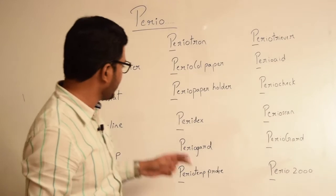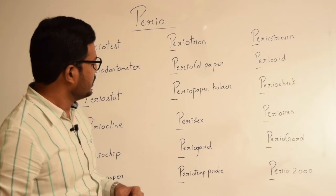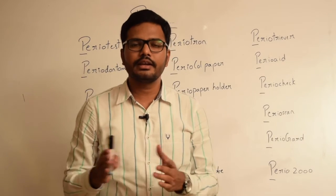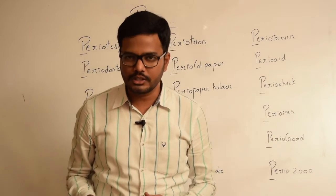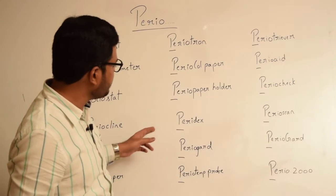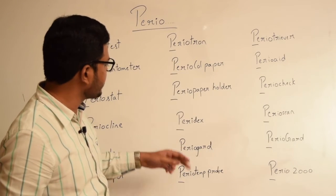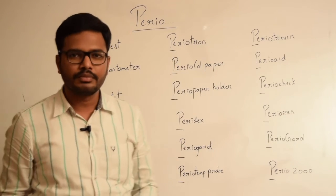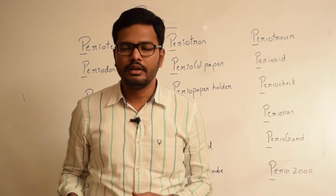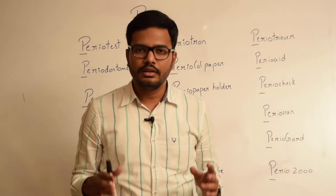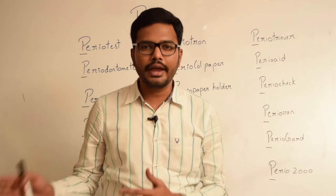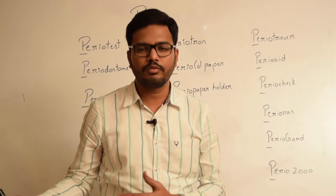Now moving to peridex and periogard. These are basically chlorhexidine-containing mouthwashes prescribed for oral rinses. They contain 0.12% chlorhexidine gluconate and the pH range is between 5 to 7. Once the patient uses them, chlorhexidine can be detected in saliva for up to 8 hours even after usage.